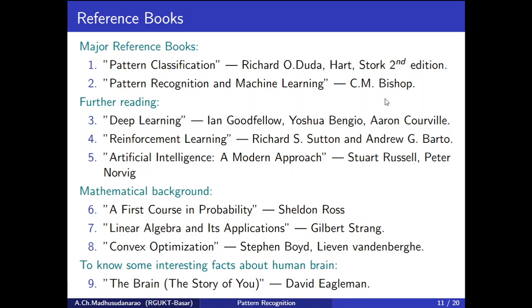If you want to learn further, you can go through Deep Learning by Ian Goodfellow and Yoshua Bengio. And Reinforcement Learning by Richard S. Sutton and Andrew G. Barto. If you want to have a broad overview of artificial intelligence, you can go through Artificial Intelligence: A Modern Approach by Stuart Russell and Peter Norvig.